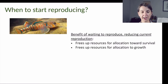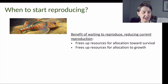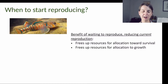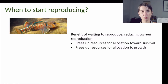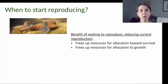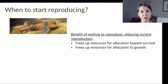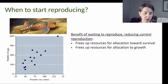Why is that? Let's think about the choice — in quotation marks — that organisms have. They can either start reproducing early or late, or anywhere on a continuum in between. What's the benefit of waiting to reproduce? If you don't reproduce early, if you wait until you are older or bigger, the resources you would have put into reproduction are freed up for other things, like increasing your survival or allocating them to your own growth.